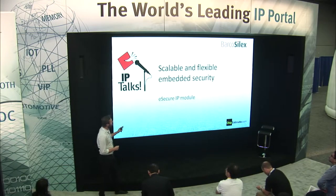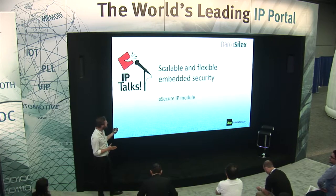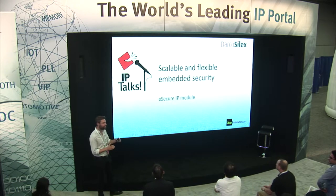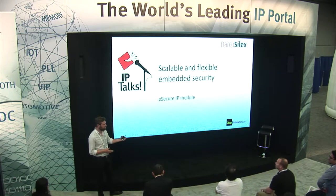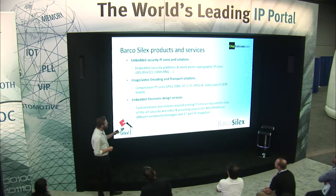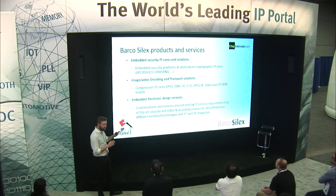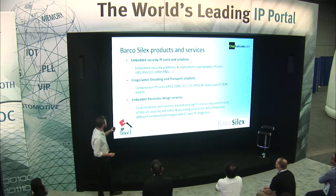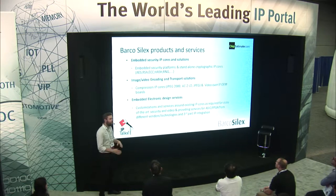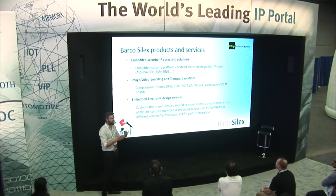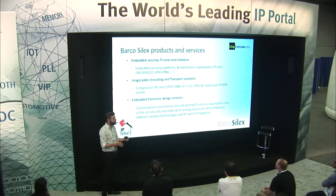What I will explain now is what a typical flexible and scalable embedded security system would look like for any connected device, specifically for the IoT. First, a little introduction on the company I work for — Barco Silex. We provide embedded security IP cores, which can be complete platforms or standalone IP cores for cryptographic operations. We also have IP cores for image and video encoding and transport solutions, and we provide electronic design services around these IP cores to integrate them into state-of-the-art systems.